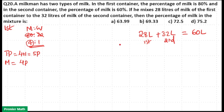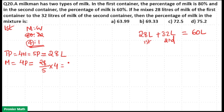Since 28 liters is taken from the first container, that 28 liters has 5 parts. So 1 part equals 28/5. Milk in the 28 liters is 4 parts, that is (28/5) × 4, which equals 112/5.